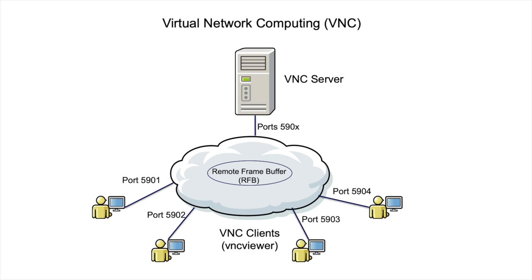You set up VNC on the server — this is the server on which you want to gain GUI access — and you install a viewer on the client system from which you want to gain access. VNC is network-based, so any firewalls between the client and the server must be configured to allow the ports configured for VNC's use.